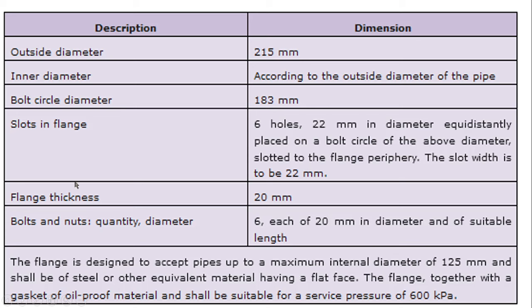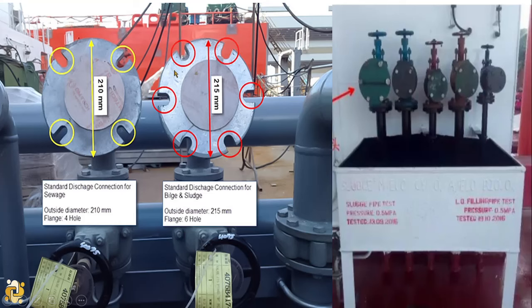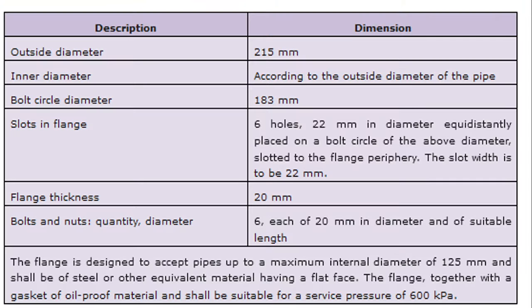The flange thickness should be 20 mm and there should be 6 bolts of 20 mm diameter. The outside diameter should be 215 mm, the inner diameter should be according to the outside diameter of the pipe but with a maximum internal diameter of 125 mm. The bolt circle diameter PCD should be 183 mm. The slot should be 6 mm and 22 mm in equidistant slot. The flange thickness should be 20 mm and the bolt tendon should be 16 mm with a 20 mm diameter in length. The same requirement also applies for sewage — 210 mm with 4 holes.